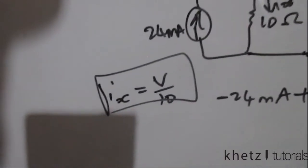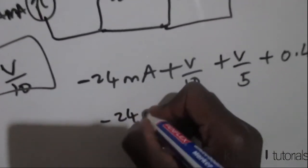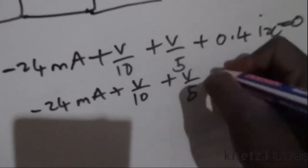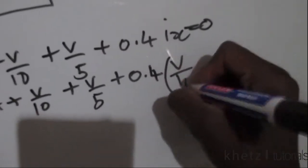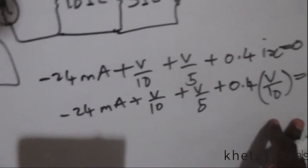So let's substitute this v/10 into this point where we see ix. Just quickly substituting that, we're going to have v/10 + v/5 + 0.4 multiplied by v/10 = 0. Then what is the common factor which we can multiply by? It's 10.